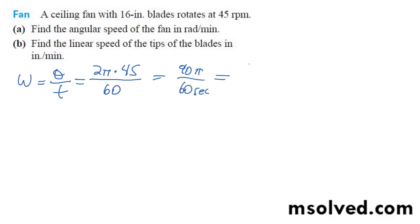And this is going to give us 3 pi over 2 radians per second.